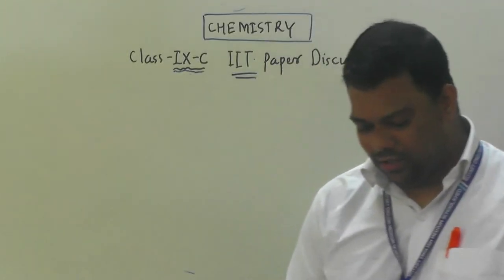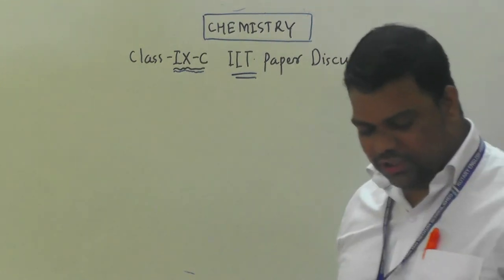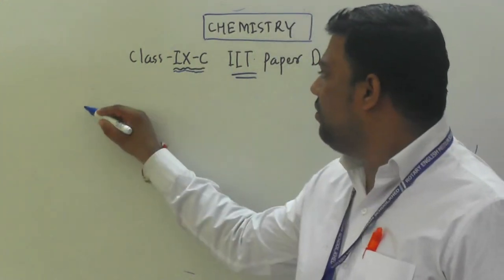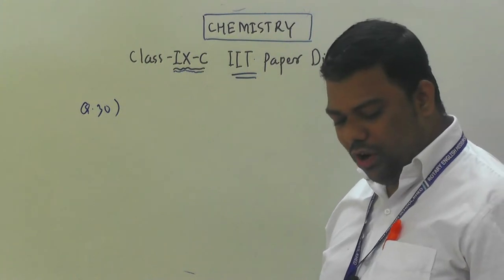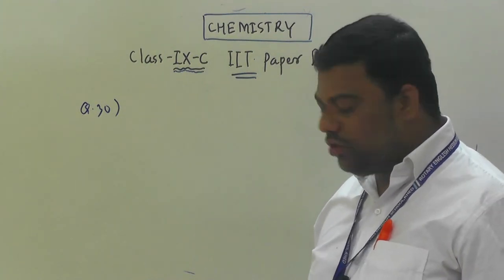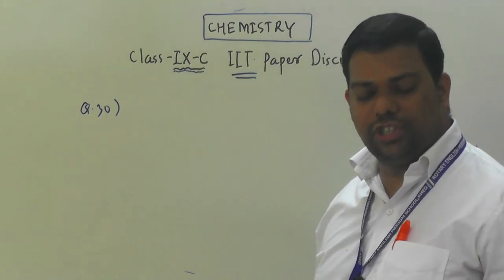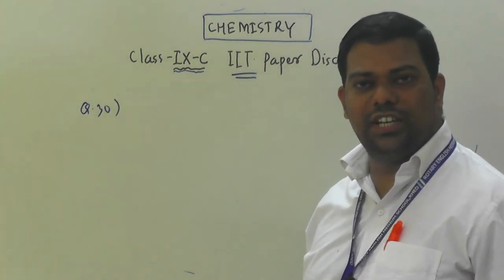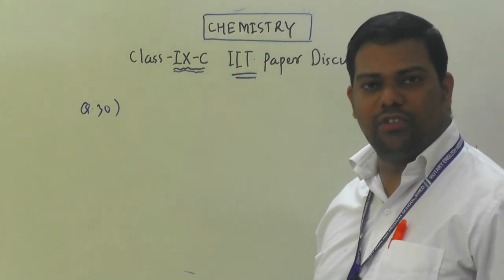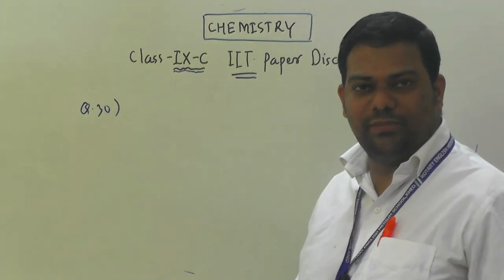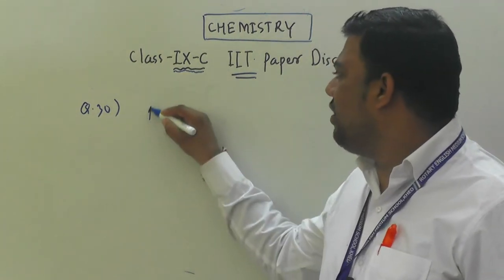Question number 30: maximum intermolecular forces of attraction — the options are bromine, air, oxygen, and copper. Obviously, the metal copper is solid in nature, and maximum attraction force exists in metals, which are solids. So the answer is option D: copper.